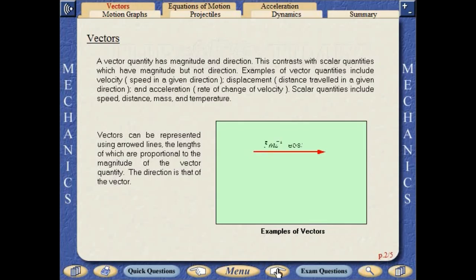A vector quantity has magnitude and direction. This contrasts with scalar quantities which have magnitude but not direction. Examples of vector quantities include velocity, displacement and acceleration. Scalar quantities include speed, distance, mass and temperature.